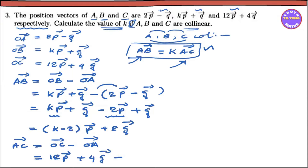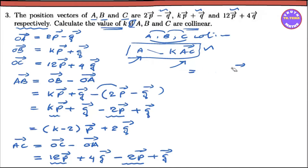So we can see that we have 12, 2, and 10p. We can see that we have plus 4 and plus 1 — 4q plus 5q vector. So we have 5q vector. Now let's check for collinearity — A, B, and C are collinear.